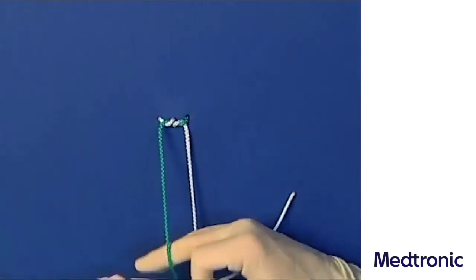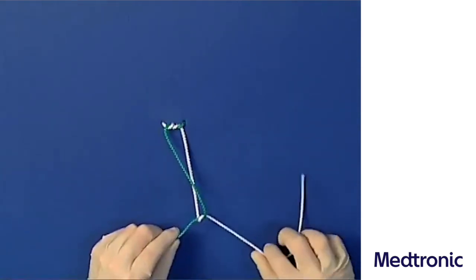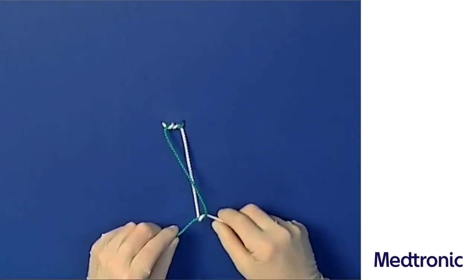The second loop can now be made with the right hand using the middle finger technique. Again, the hands have to be crossed anti-clockwise.